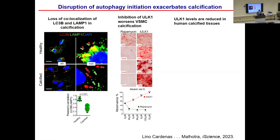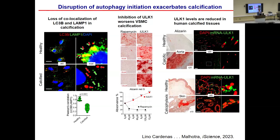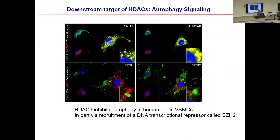This was all in our in vitro models. How does this relate to human diseases? We took tissue samples from patients with both large vessel aortic calcification and small vessel calcification. In in situ hybridization studies, we observed a significant reduction in the expression of ULK1 in both disease states, suggesting there appears to be reduced autophagy within the context of vascular calcification in human tissues. Then — how does HDAC9 relate to autophagy? When we knock down HDAC9, we see this nice yellow signal representing intact autophagy flux and good co-localization of LC3B and LAMP1. But when we overexpress HDAC9, we see the opposite — we don't see that yellow co-localization signal.